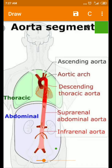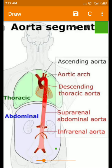These posterior intercostal arteries are 11 pairs in number and these arteries supply the greater part of the intercostal spaces. Out of these 11 pairs, the first and second arteries are branches of the superior intercostal artery, and the remaining nine pairs are branches of the descending thoracic aorta.